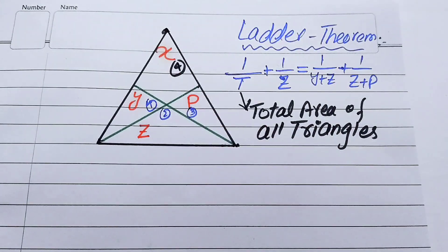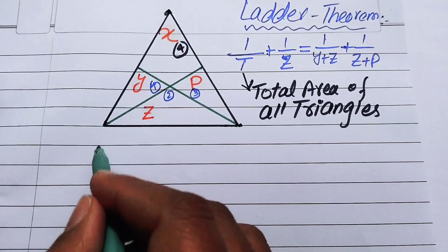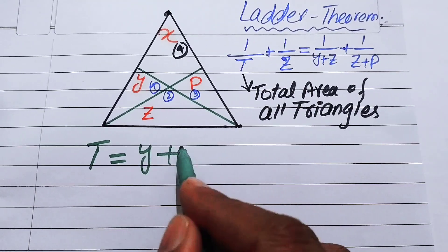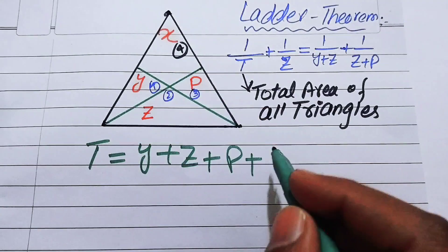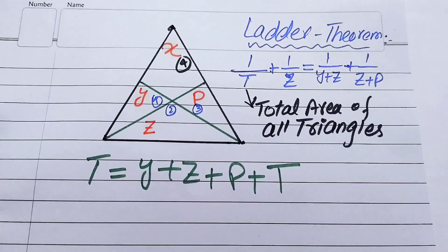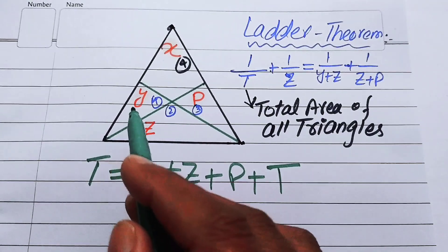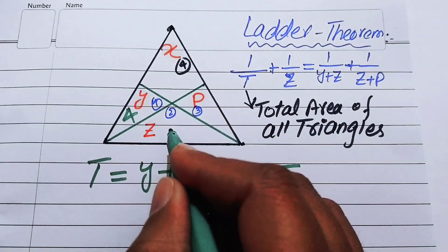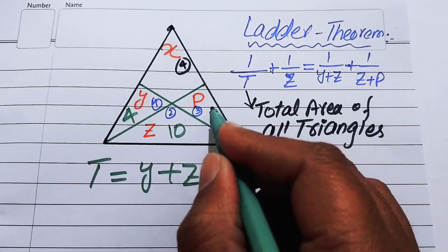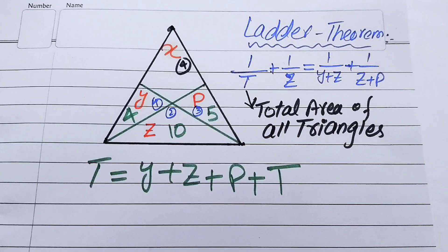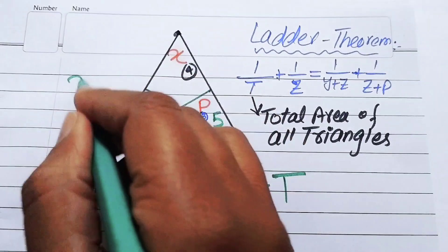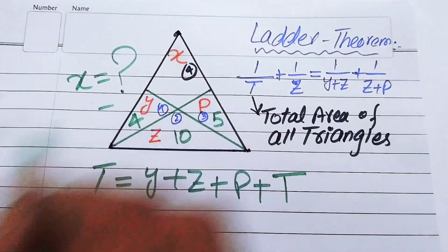Now we find the value of t. The first triangle has area y, the second has area z, the third has area p, and the fourth (largest) triangle has area t. We are given that the area of triangle one is 4, triangle two is 10, and triangle three is 5. Our question is to find the area of the fourth triangle, denoted by x.